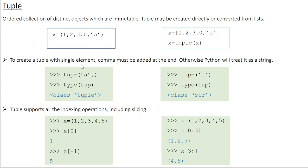One thing you have to particularly keep in mind is that whenever you define a tuple with a single element, the element should be followed by a comma. Otherwise, Python will treat it as a string. For example, if you have a single-element tuple2 equal to 'a', that element should be followed by a comma. When you check its type, you get the data type as tuple. On the other hand, if you define it without the comma and check the type, you get class 'str', which means Python treats it as a string. So you should be careful about single-element tuples.